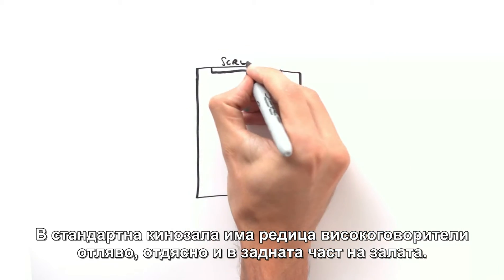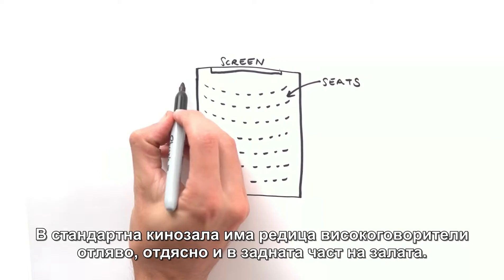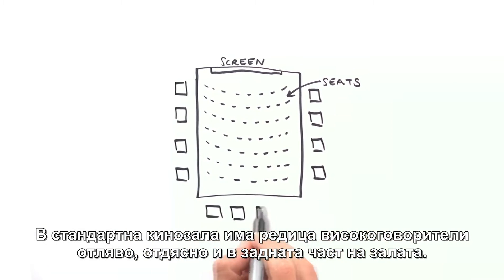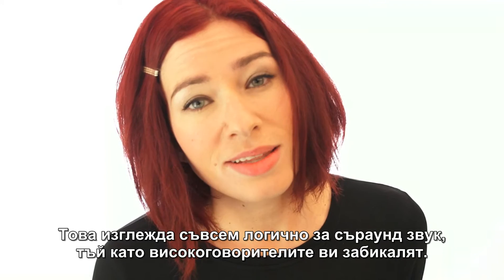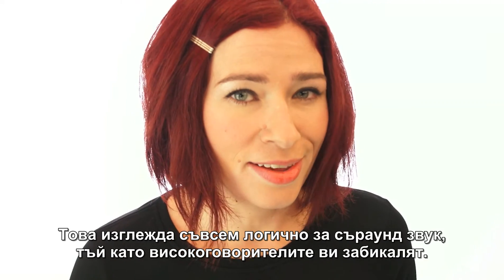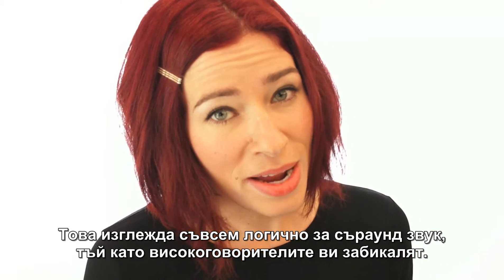In a typical surround movie theater, you get arrays of speakers on the left and the right and the rear of the auditorium. This seems like it would be a logical recipe for surround sound since the speakers are surrounding you, but each side of the theater only gets one source.